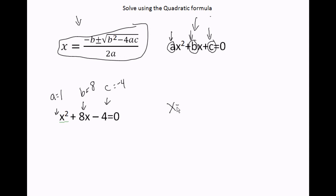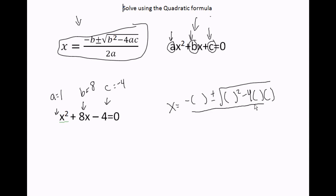x equals negative b plus or minus the square root of b squared minus 4 times a times c, all divided by 2a. Let's plug our numbers in. b was 8, a was 1, and c was negative 4.